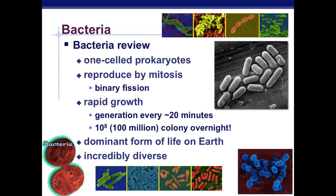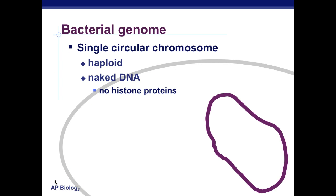A little review of bacteria. We know that bacteria is a single-cell prokaryote. It divides by binary fission, and generations can regenerate about every 20 minutes. They can grow relatively quickly and be incredibly diverse. The bacterial genome is a single circular chromosome. It's haploid, meaning there's only one chromosome, not a pair.